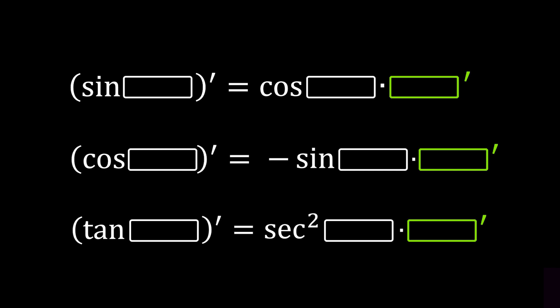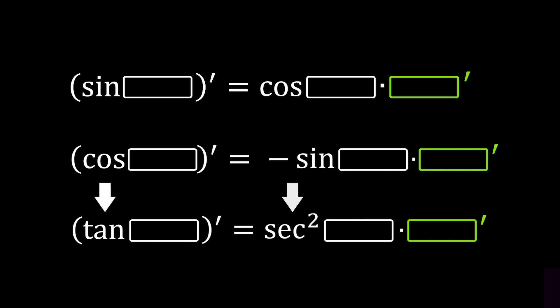We will be using three formulas displayed on the screen. The derivative of sine is cosine, the derivative of cosine is negative sine, and the derivative of tangent is secant squared. I will provide a separate video later to prove these trigonometric differentiation formulas. In all of these formulas, you can see a green box-prime at the back — it represents the derivative of the preceding box. As I always emphasize, when differentiating, you must always remember to multiply by the derivative of the box, which is the box prime, at the end.